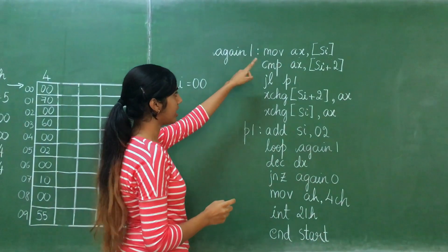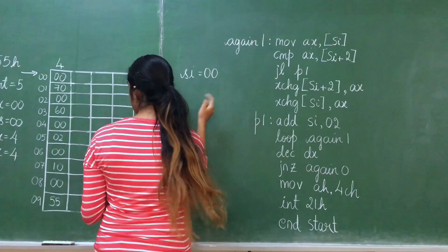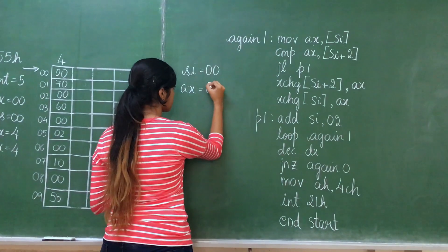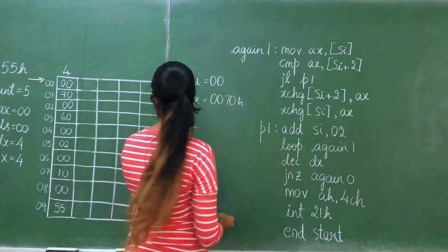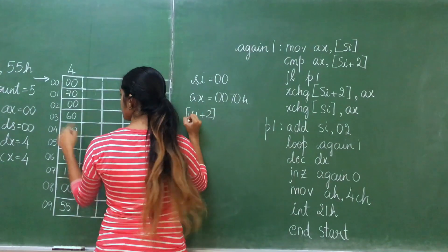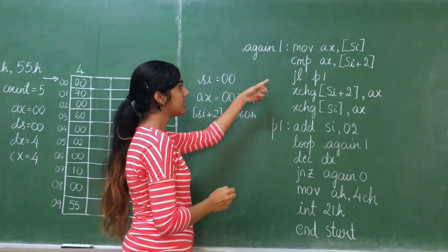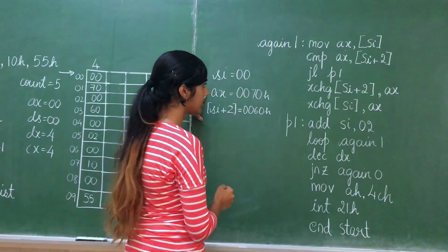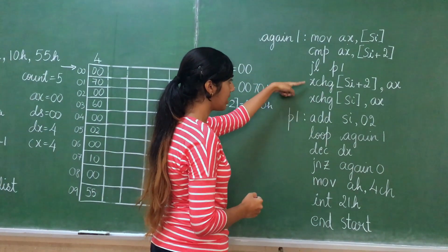The first line in Again1 is move AX, [SI]. This is indirect indexing mode. The value in 0000 will be stored in AX. In 0000, it is 0070, and that will be stored in AX. Then we compare AX and [SI+2]. SI plus 2, that is the value stored in 0002, is 0060. Comparison always happens with respect to destination. This is source and this is destination, so with respect to AX, 0070 is greater than 0060. So this line is ignored and the values are exchanged.